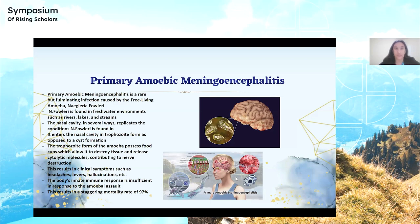The trophozoite form contains food cups, which contributes to nerve and tissue destruction, as opposed to a cyst form, which the amoeba exhibits when environmental conditions are unstable. The body's innate immune response is insufficient, which is why, just like GAE, PAM also has a mortality rate of 97 to 98 percent, with nonspecific symptoms such as fevers, headaches, and hallucinations that are similar to other bacterial and amoebic infections.